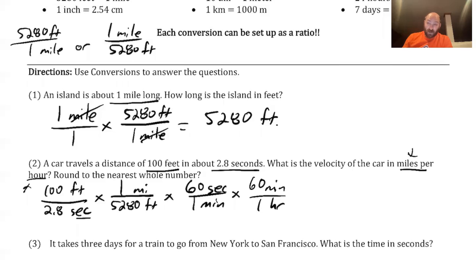So let's take a quick look and see what cancels out in terms of those labels. Feet and feet cancel out, seconds and seconds cancel out, minutes and minutes cancel out. I'm left with miles in the numerator, hours in the denominator, and that is miles per hour. So my last step is just multiply everything through.